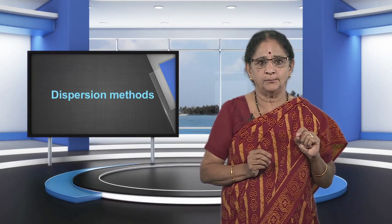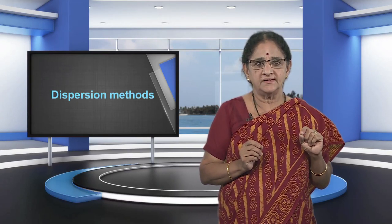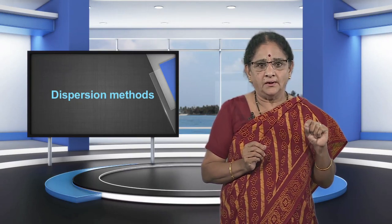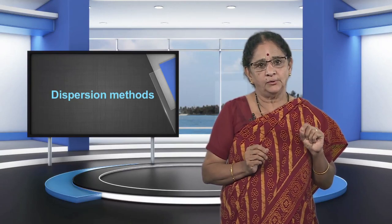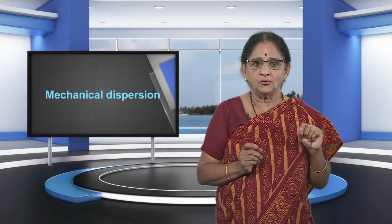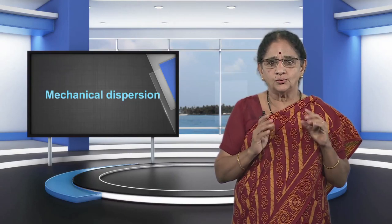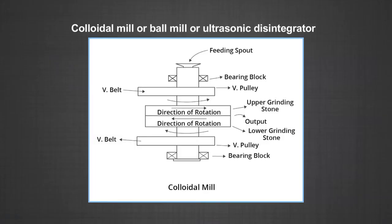The second method is called dispersion method. In dispersion methods, the large particles of a substance are broken into small particles of colloidal size in a dispersion medium. Suitable stabilizers are used to stabilize these sols. Various dispersion methods include: number one, mechanical dispersion; number two, electrical disintegration or Bredig's arc method; and number three, peptization. Colloidal solutions of inks, paints, and varnishes are prepared by mechanical dispersion. The large-sized substances are broken down to colloidal size by grinding in a colloidal mill, ball mill, or ultrasonic disintegrator. A typical depiction of a colloidal mill is shown in the figure.